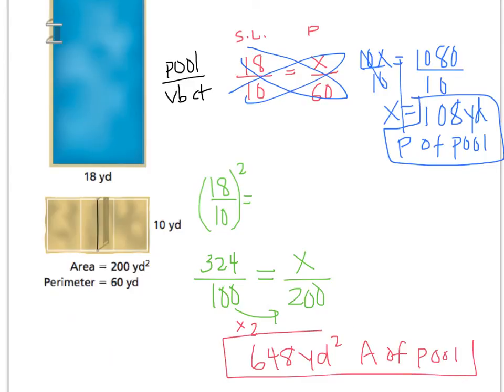All of this was done without ever knowing the full dimensions of the pool. We found both the perimeter and the area of the pool knowing only one side length. If you have any questions, write them down and ask when you come to class.